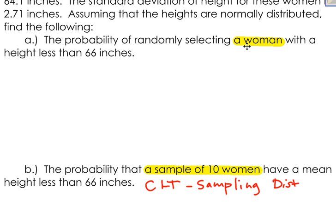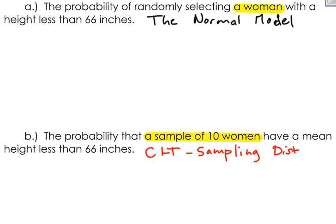As soon as I see this sample, I know that in part B I am going to use the central limit theorem because I'm dealing with a sampling distribution. Whereas in part A, if I'm dealing with just a single woman, I am going to use the normal model. In both cases, I am going to find a z-score and then use that z-score to find the area under a bell-shaped curve. But for part B, my z-score formula is a little bit different.